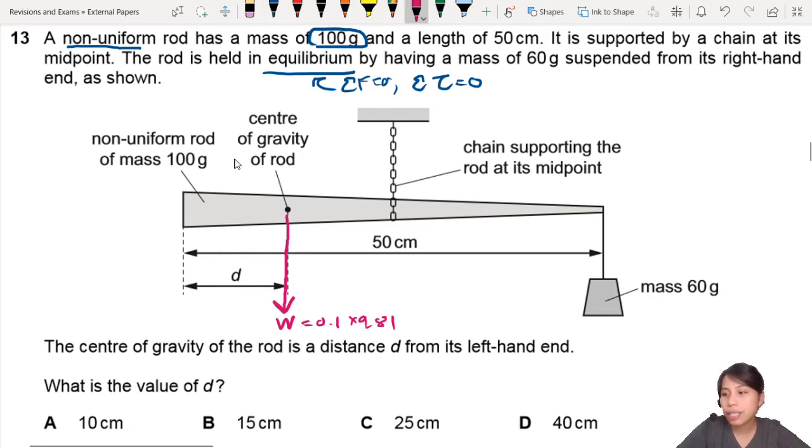Mass of 60 grams is hanging on the other side. So this is considered like a force downwards, which is the weight of this 60 gram mass, which will be 0.06 times 9.81.